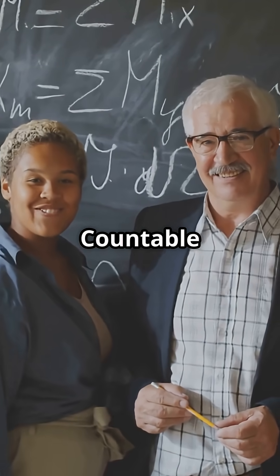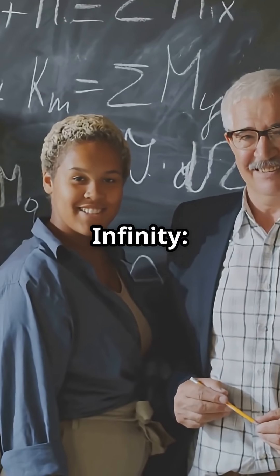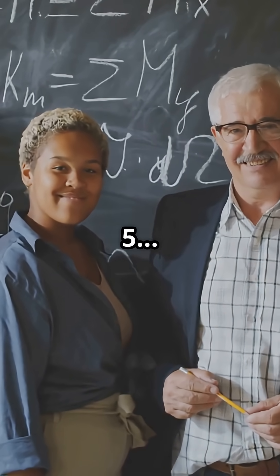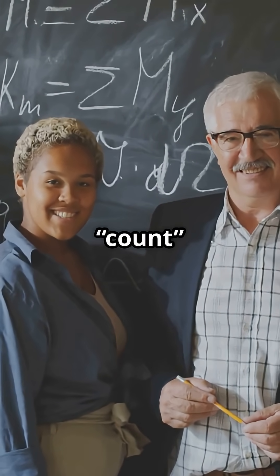Two types of infinity: countable and uncountable. Countable infinity is the infinity of whole numbers—1, 2, 3, 4, 5. Even though it never ends, we can count them one by one.